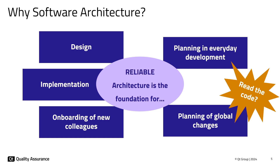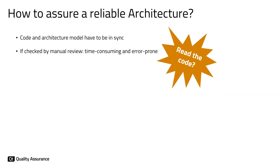There are many advantages of maintaining a software architecture. However, we have to add one word here: the word reliable. The architecture has to be reliable. It has to reflect what is actually going on in the code to be used for all these nice things that we discussed earlier.